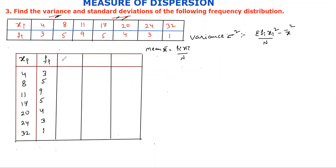We have the fi·xi column and the xi² column for the variance formula. The mean is equal to x̄ = Σfi·xi / n, where n is the number of observations.